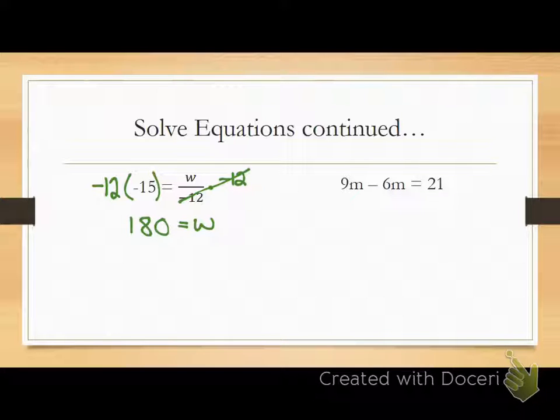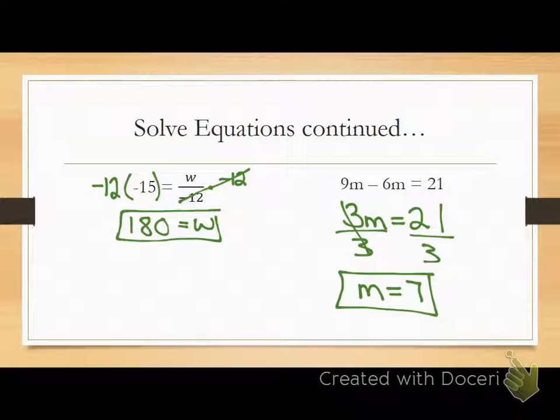What do I do on this second one? Samantha? You first have to take 9 and subtract it. Mm-hmm. And what do you get? You will get 3M. Very good. 3M equals 21. Then what do you do? You divide 3 by 21, and you get 7. Very good. M equals 7. Who got both of those right? Anybody get both right? Very good.